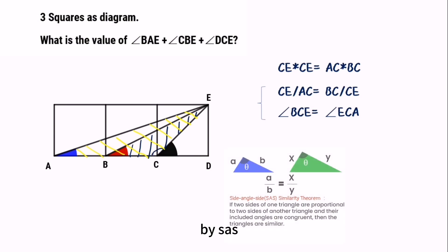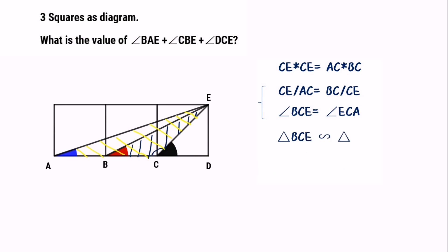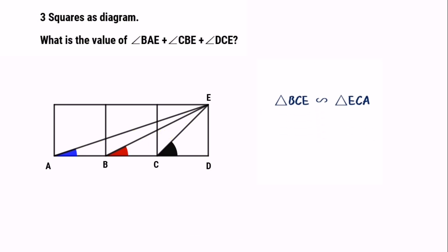By SAS, we can get triangle BCE similar to triangle ECA. After we get triangle BCE similar to triangle ECA, so